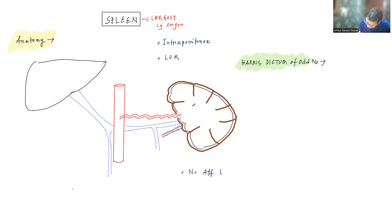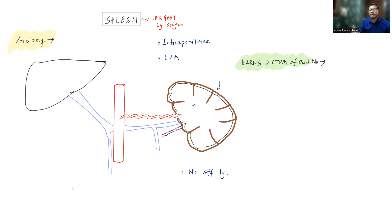However, there are very important distinctions between the lymph node structure and the spleen structure. In spleen, you will not find afferent lymphatics. In lymph nodes, afferent lymphatics are present on the convex surface. But in the case of spleen, even though it also has a convex surface, it will not have afferent lymphatics.